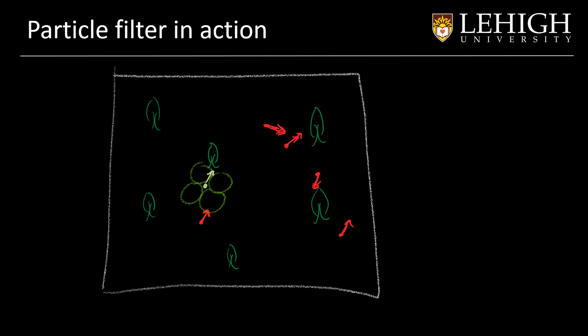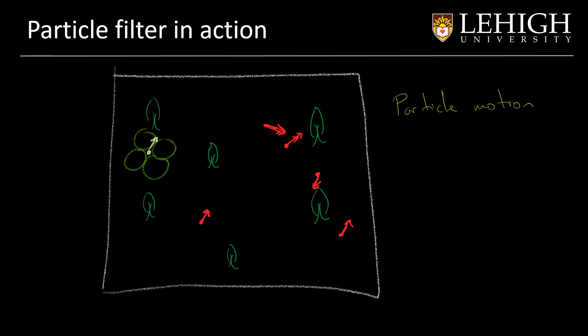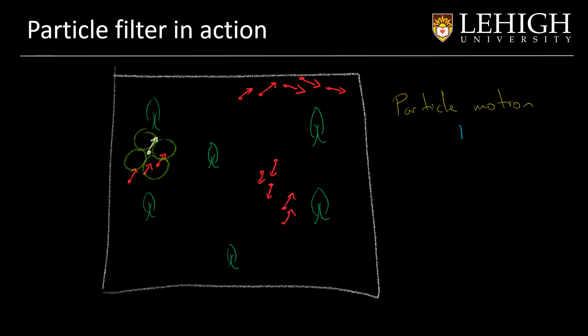Now let's recap the whole process. We start when the robot moves, and we have the first part: particle motion. We start moving every particle by applying the motion model. Then we move to the sensing step, where we assign a weight to each particle. For example, these particles are very good, but these particles don't see any tree. We can do it based on the detection of this tree. Some particles don't see any tree, so their weights are very low, and the same for these three particles over here. This particle kind of sees a tree.